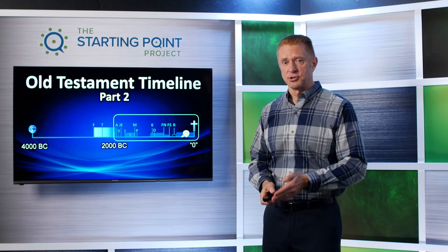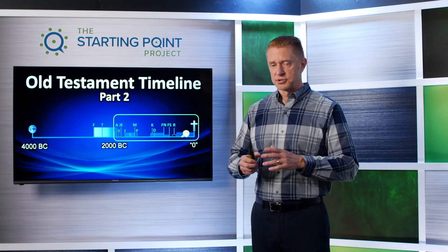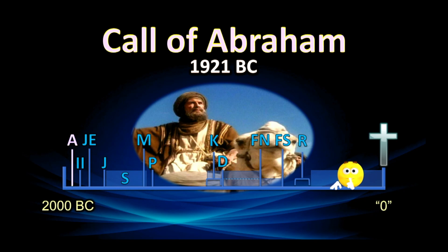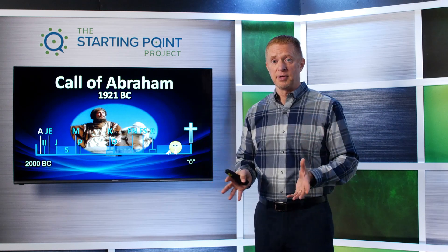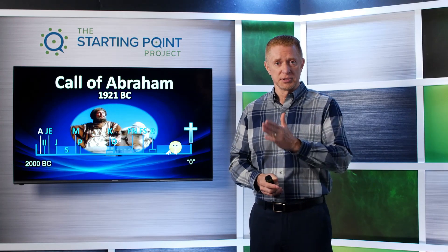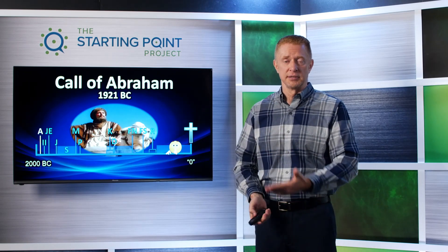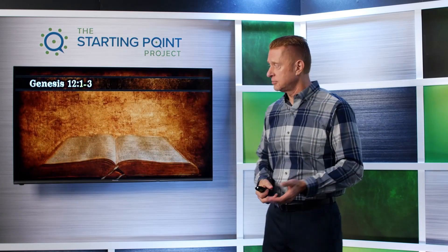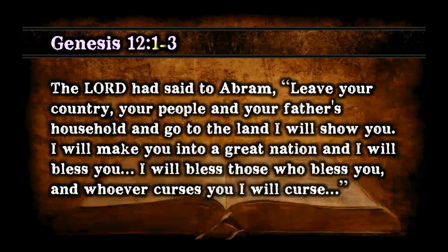We go back to our timeline to look at Part Two, from roughly 2000 to the time of Christ. The first major event is the call of Abraham — his name was originally Abram, and God eventually changes it to Abraham. You've got all these random people on the earth, but God wants to send his son to die on the cross, so he chooses a group of people through whom his son would be born. He starts by calling Abraham, and through his descendants the Messiah will come. Genesis 12:1-3: 'Leave your country, your people, and your father's household, and go to the land I will show you. I will make you into a great nation and I will bless you.'